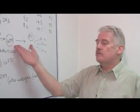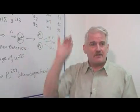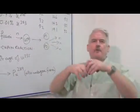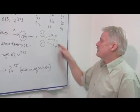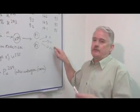So the uranium-235 doesn't just spit out another particle. It actually falls to bits into two pretty hefty lumps and chucks out a pile of neutrons.